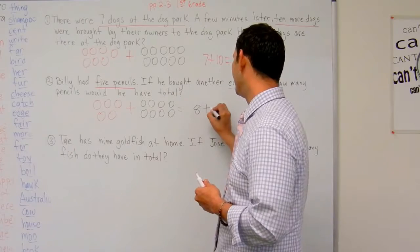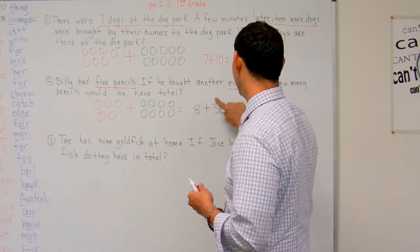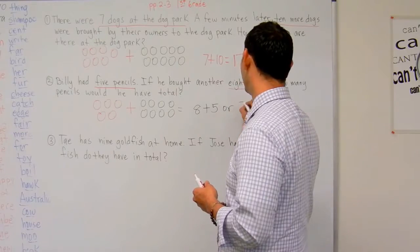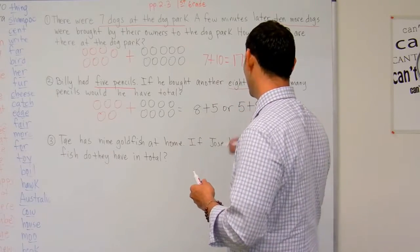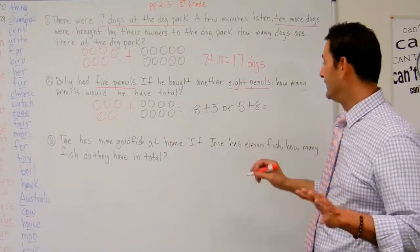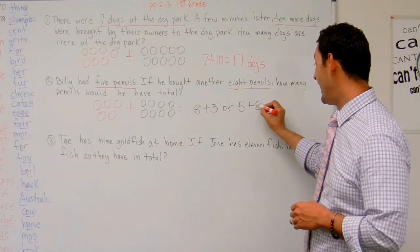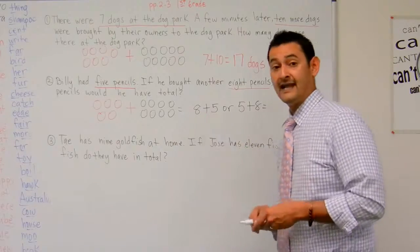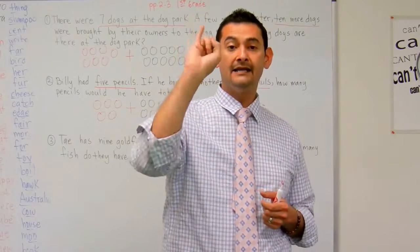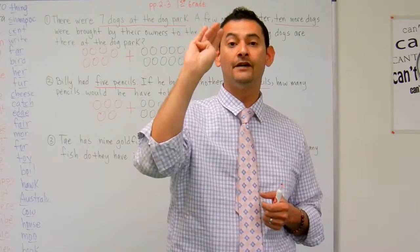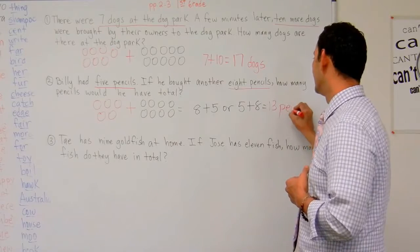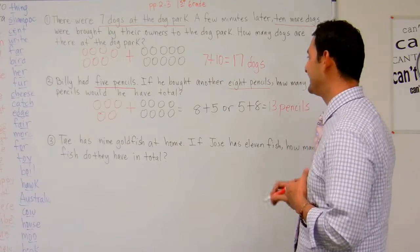So that's going to be 8 plus 3. I'm sorry, 8 plus 5, or 5 plus 8 equals. So let's see. I can go ahead and I can just count up. So here I have 8 plus 5. Let's count up. Let's put 8 in our head and let's count up: 8, 9, 10, 11, 12, 13. So Billy had 13 pencils.